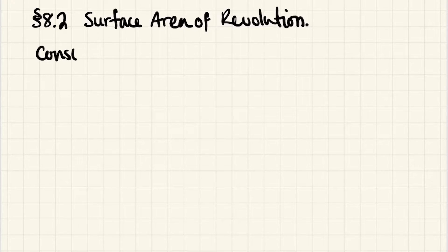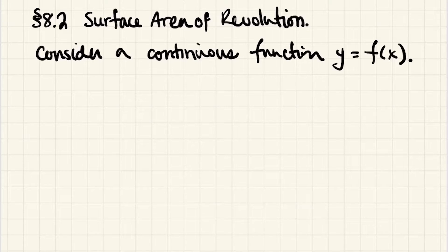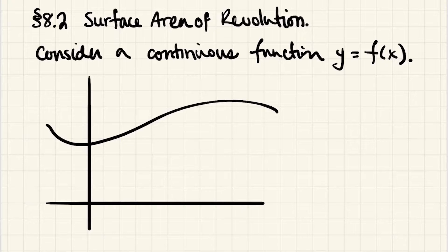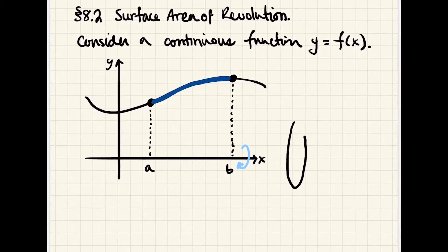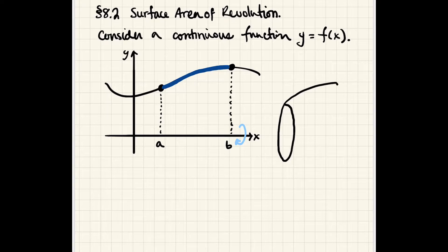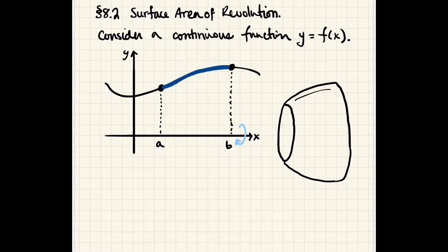So let's consider a continuous function. And what we want to do is take this bit of the curve here and rotate that guy around, say, the x-axis. And of course, we're used to doing this with volumes, but we're going to do this now. And instead of seeking the volume, what we're seeking now is the surface area.